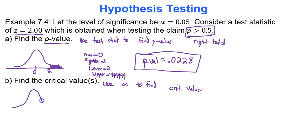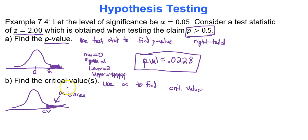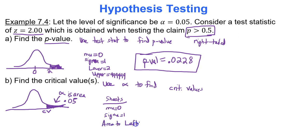We're still dealing with a right-tailed test. Shade the right tail. Your goal when finding a critical value is to find the x-axis value that separates the tail from the rest of the graph. Alpha is the area of the shaded tail. Since this is a one-tailed test, alpha of 0.05 goes entirely in the right tail. In Google Sheets, to find the data value, mu is 0, sigma is 1, and you need the area to the left. If the area to the right is 0.05, the area to the left is 1 minus that.